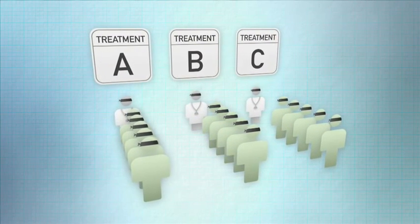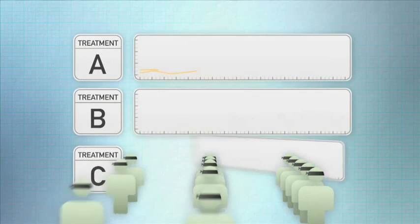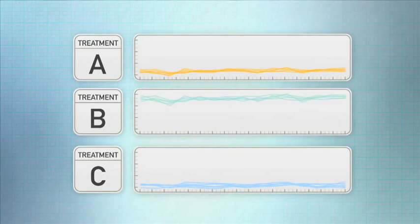The trial lasts long enough to satisfy the statisticians and the scientists. Finally, when the results are tabulated by a blinded statistician, this is called triple blinding, we get the results.